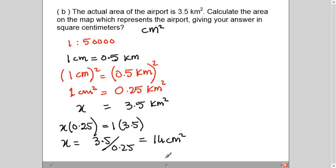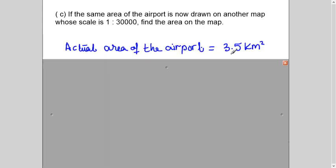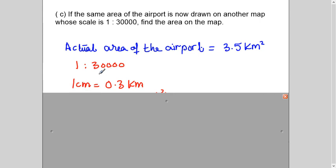Now, only one more concept which is tested in this type of question. And that is, if the same airport is represented on some other map by some other engineer, and he has taken the ratio of map scale is 1 is to 30,000, then what will be the area of the airport on his map? You are one engineer, I'm another engineer, we are using different scales. So what area will be on his map? Simple. I know the actual area of the airport, which is given to me in the last question, 3.5 square kilometers.